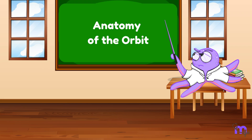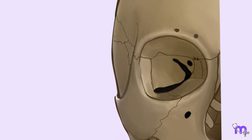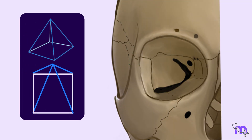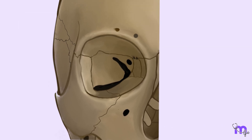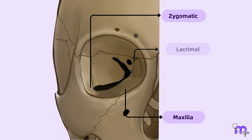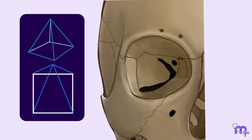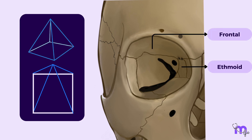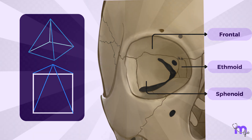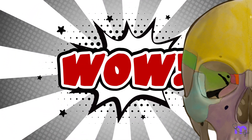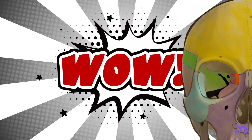Let's learn about its anatomy. Imagine the orbit as a quadrangular pyramidal cavern situated in the upper region of the face. It emerges from the collaboration of four facial bones — the maxilla, zygomatic bone, lacrimal bone, and palatine bone — along with three cranial bones: the frontal bone, ethmoid bone, and sphenoid bone. This convergence creates an anatomical marvel that deserves admiration.